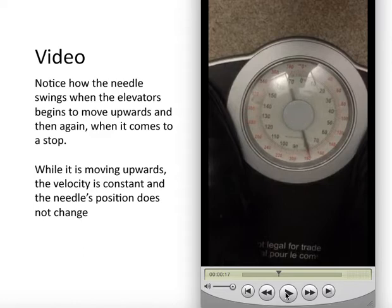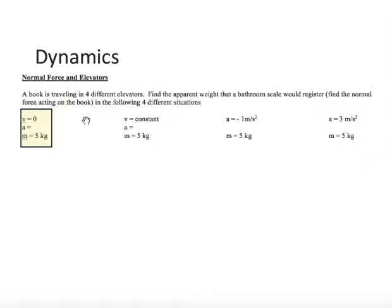So, now we're going to try to understand this in terms of a question. This is a common question students often face on a physics test. A book is traveling in four different elevators. Find the apparent weight that a bathroom scale would register. Find the normal force acting on the book in the following four different situations. So we're going to look at this situation right now.